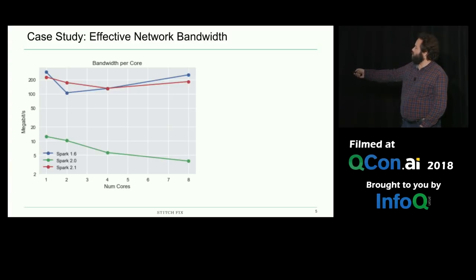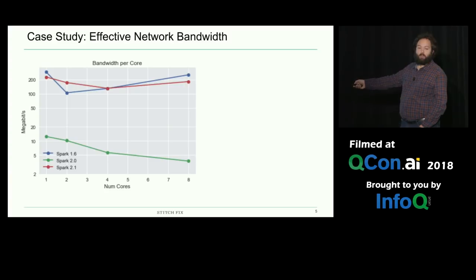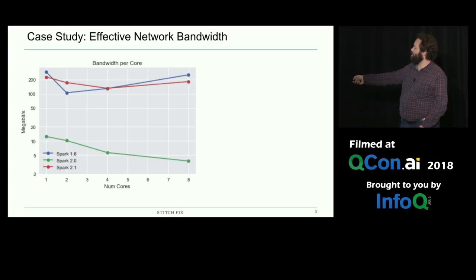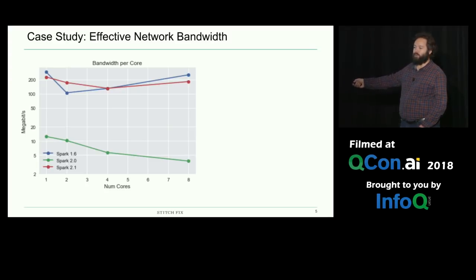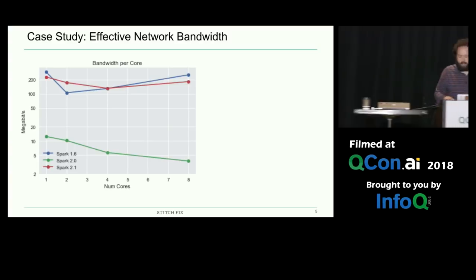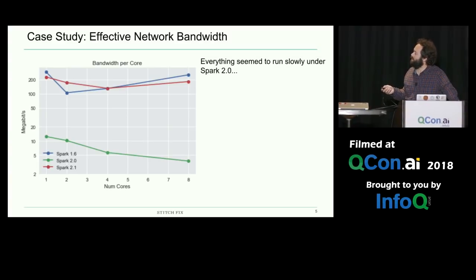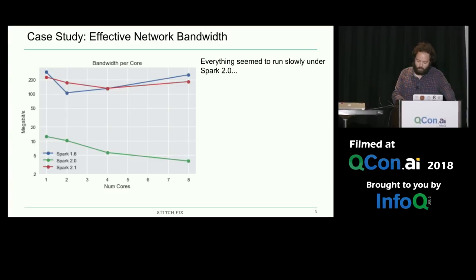The blue line is for Spark 1.6 — an actual installation from last fall when I did this. Spark 2.0 is the green line — notice it's much lower. And Spark 2.1 is the red line. This is a logarithmic scale. Spark 1.6 and 2.1 were getting around 100 to 200 megabit effective network bandwidth — a completely respectable number. Spark 2.0 was getting home DSL kind of numbers. It's just absurdly low.